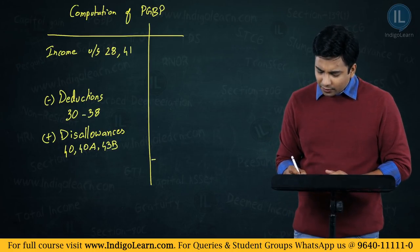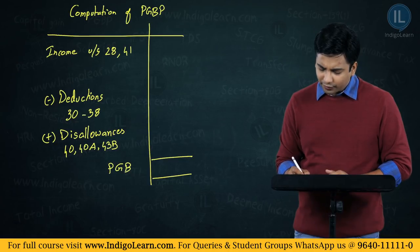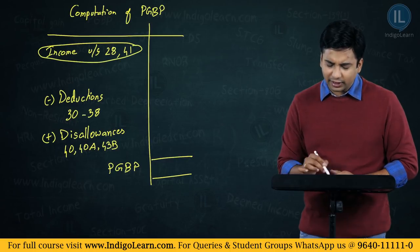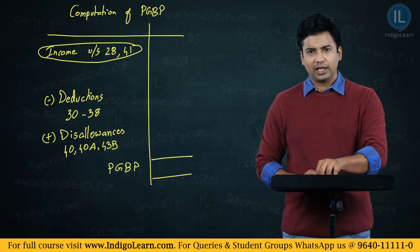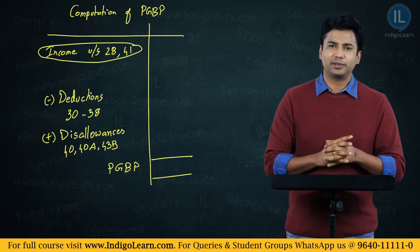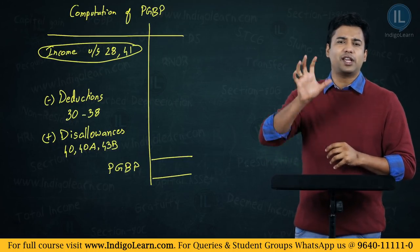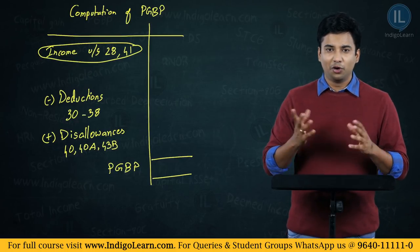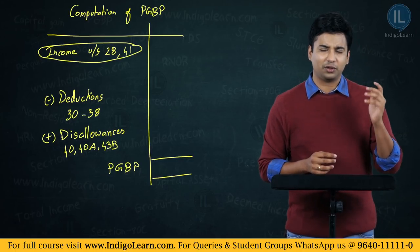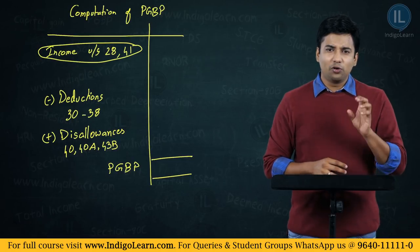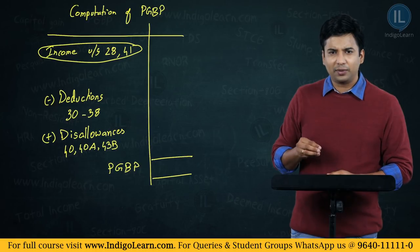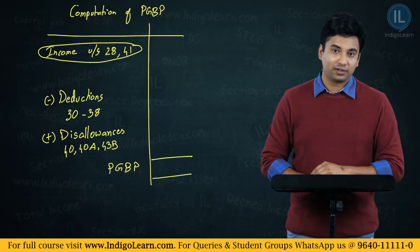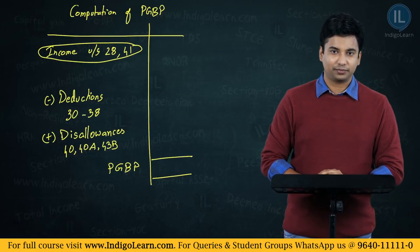Whatever we get after this, I call it profits and gains from business and profession. Now, sometimes in an exam question, you are given the profit and loss account of the SSE and asked to ascertain profits and gains from business or profession as per the Income Tax Act 1961. On the credit side you will see revenues; on the debit side, expenditures. How will you identify whether income on the credit side is to be included under PGBP or not?